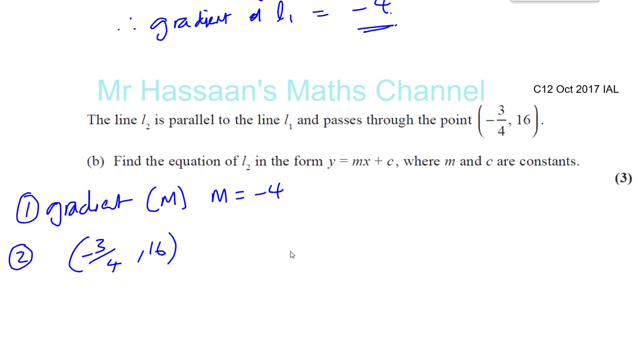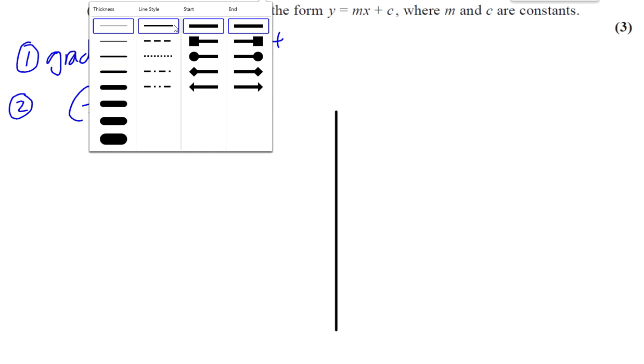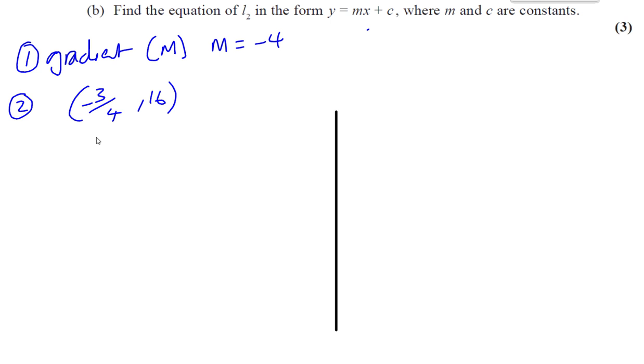Okay, now in order to find the equation of the line, we can just use this. So there's two different methods that we can use. Okay, two different ways that you can use to find the equation of a line. And I like to use one of them in one particular case and another one in another particular case. But most people, they will stick to one or the other. So let's start off with what most people are familiar with, y equals mx plus c. So we know that m is minus 4 and the point of the line is minus 3 quarters and 16. So our aim is here to find c.